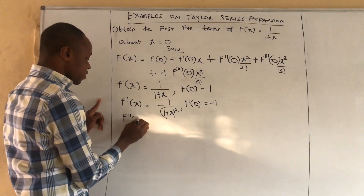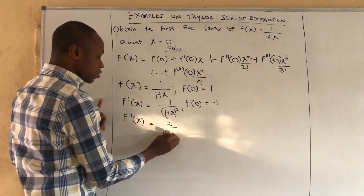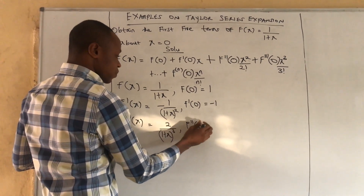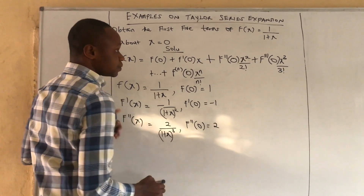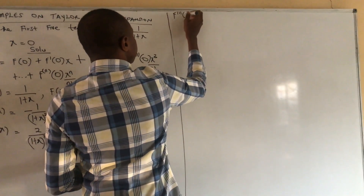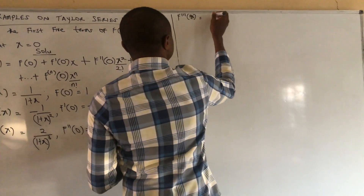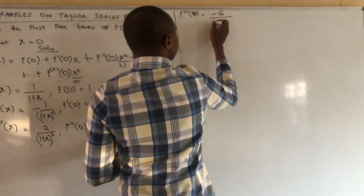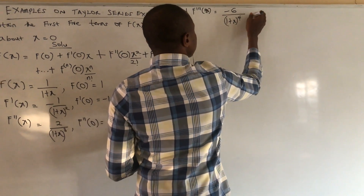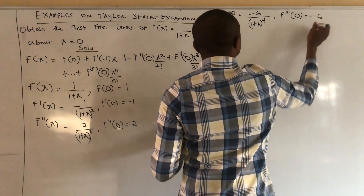If we obtain f double prime of x, we have positive 2 over (1 plus x) all raised to power 3. At x equal to 0, we have 2. Continuing the process, the third derivative of x is minus 6 over (1 plus x) all raised to power 4, such that f triple prime at 0 gives us minus 6.